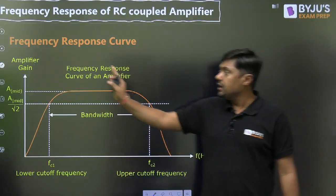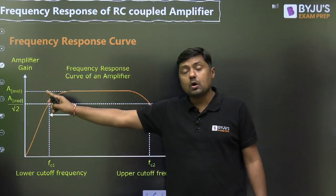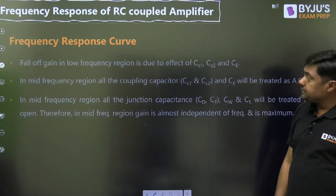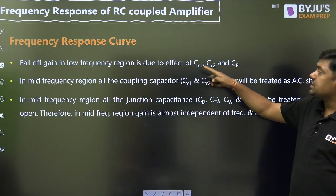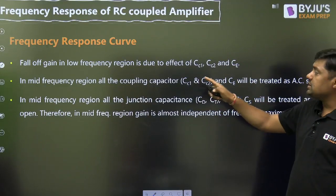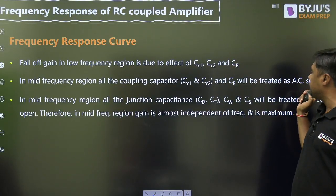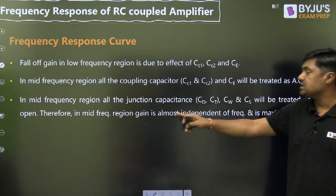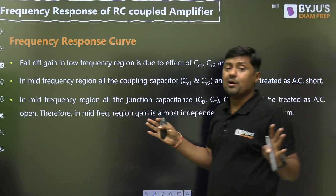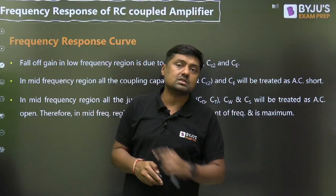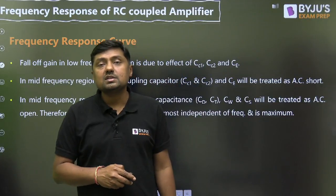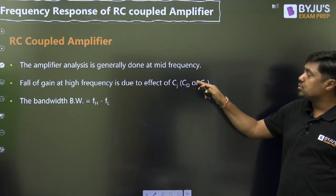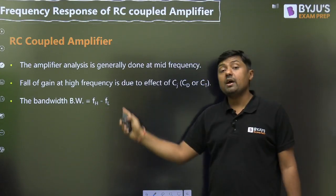These are the important points. Fall of gain in low frequency region is due to the effect of CC1, CC2, and CE. In mid frequency region, all the coupling capacitors and CE will be treated as AC short. In mid frequency region, all junction capacitances will be treated as AC open. Therefore, in mid frequency region, gain is almost independent of frequency and is maximum. There is no change in the gain. Amplifier analysis is generally done at mid frequency. Fall of gain at high frequencies is due to the effect of junction capacitance. The bandwidth is given by FH minus FL.